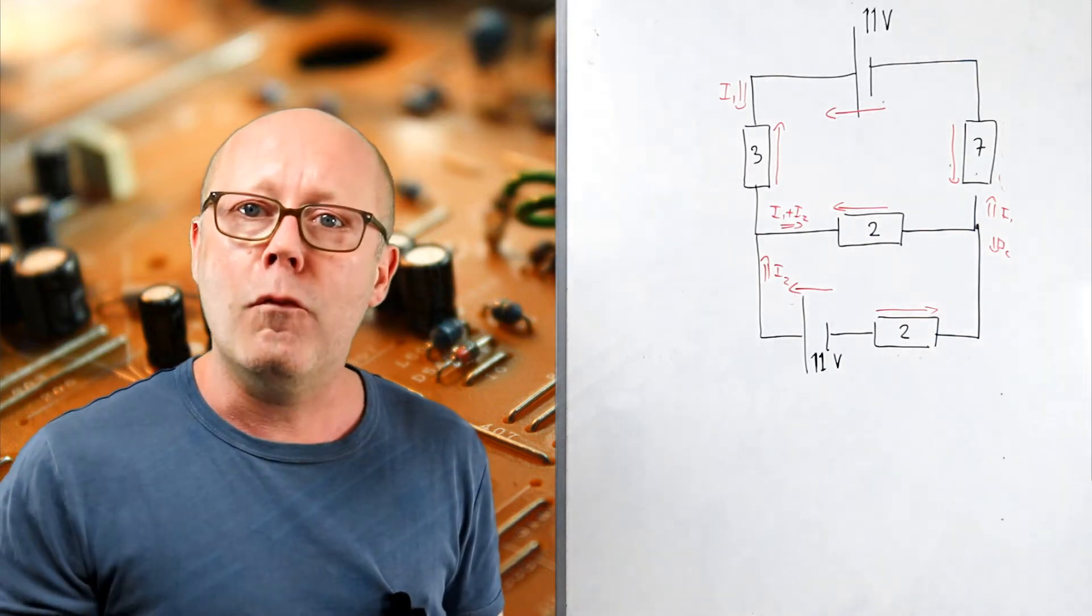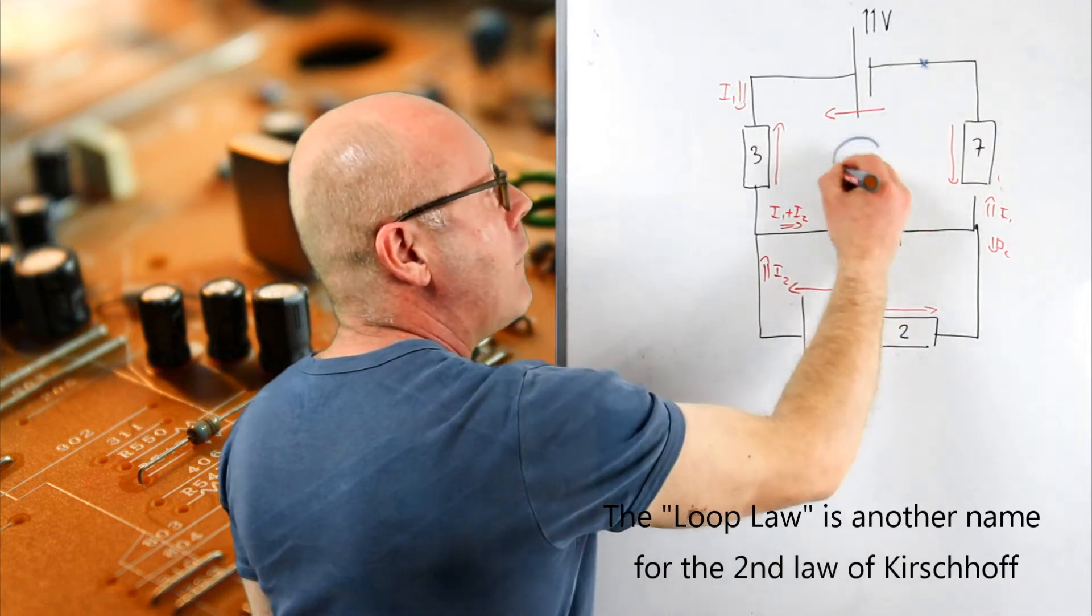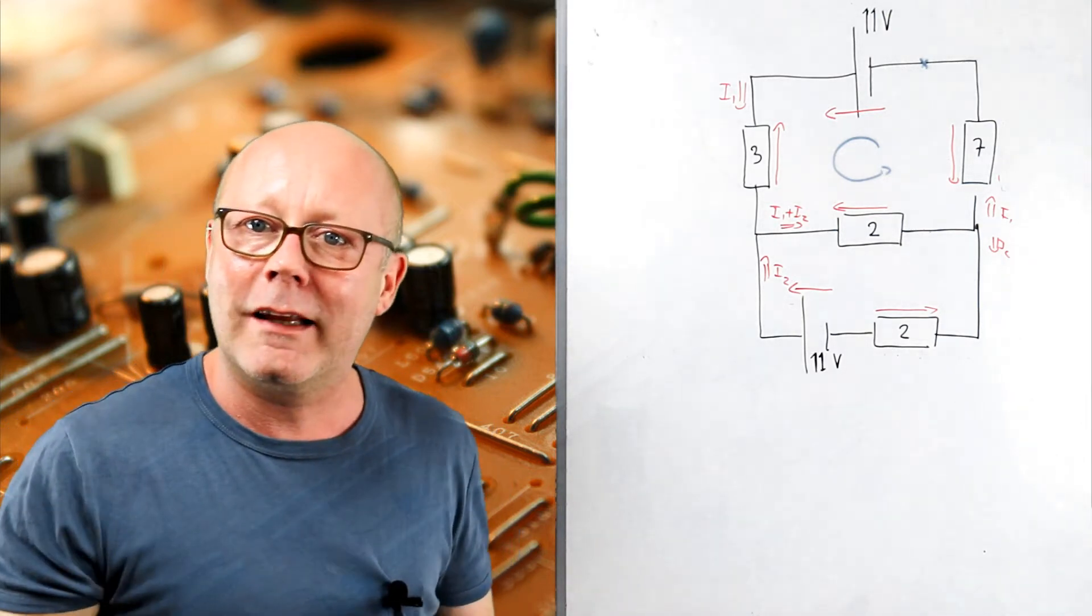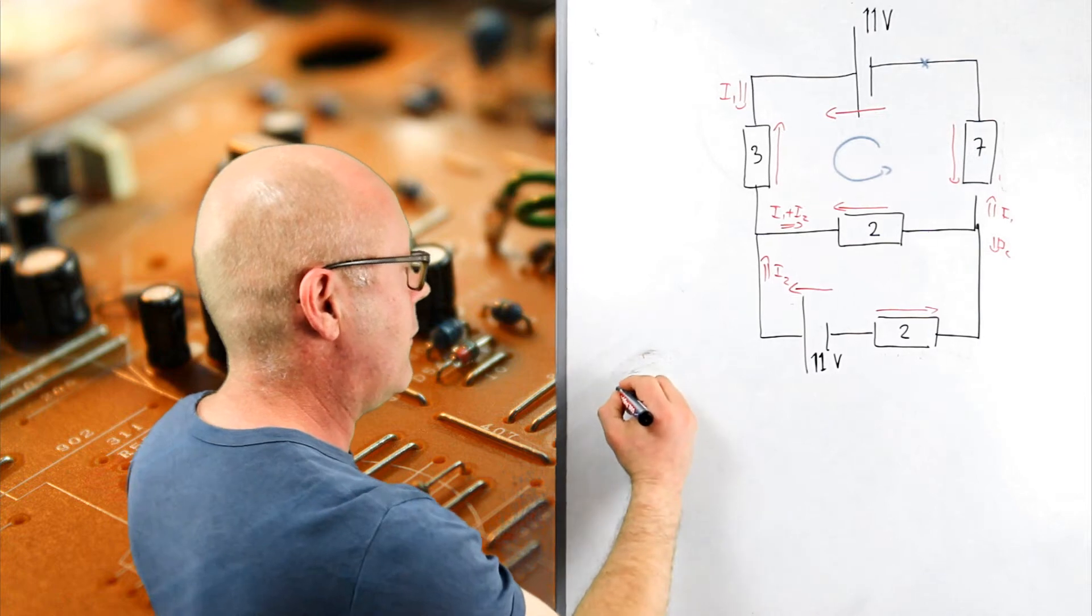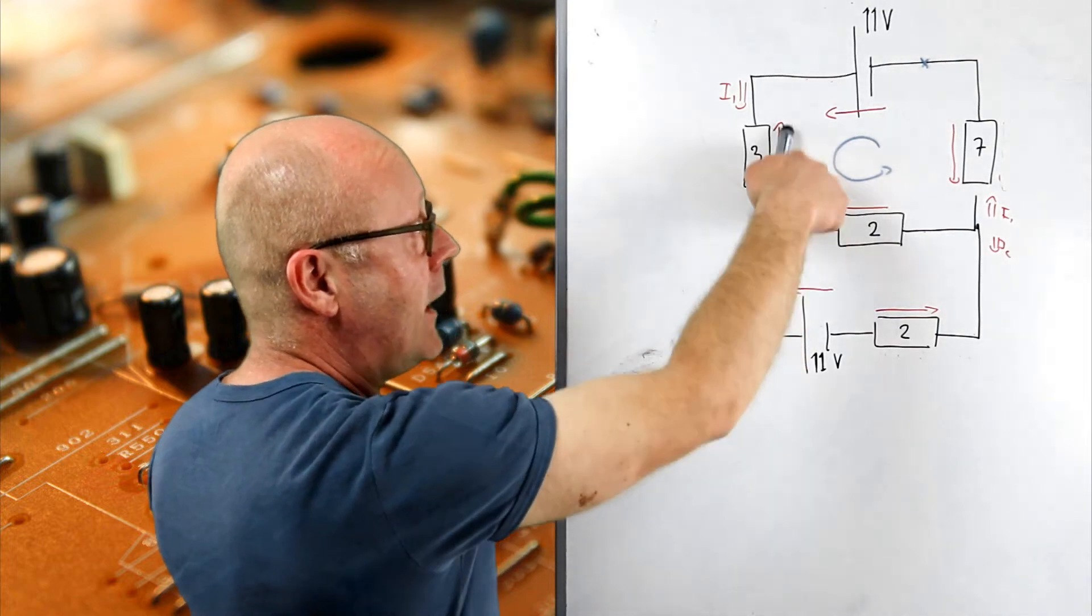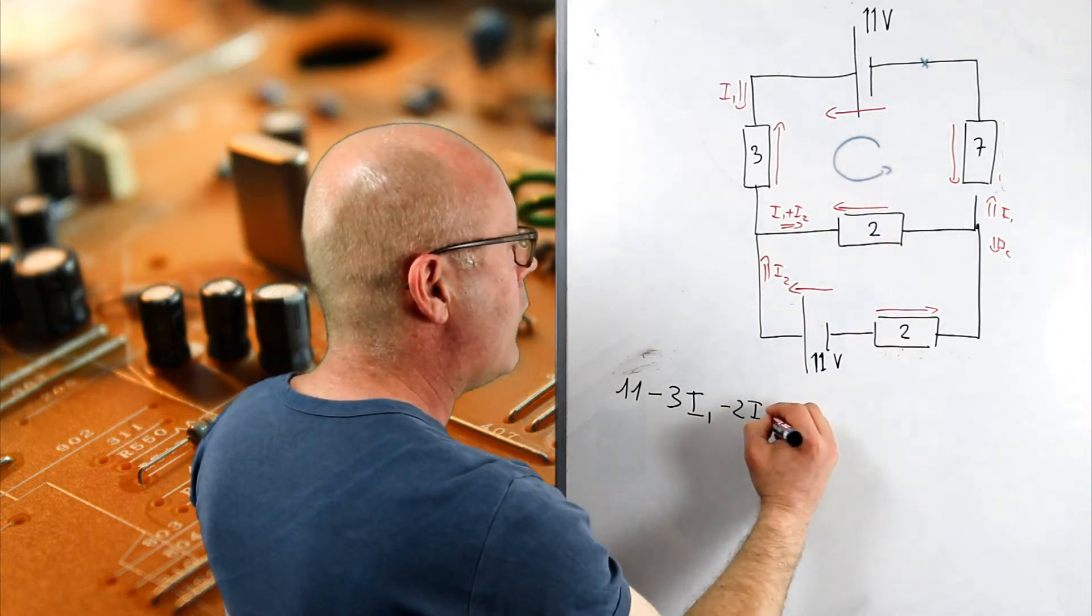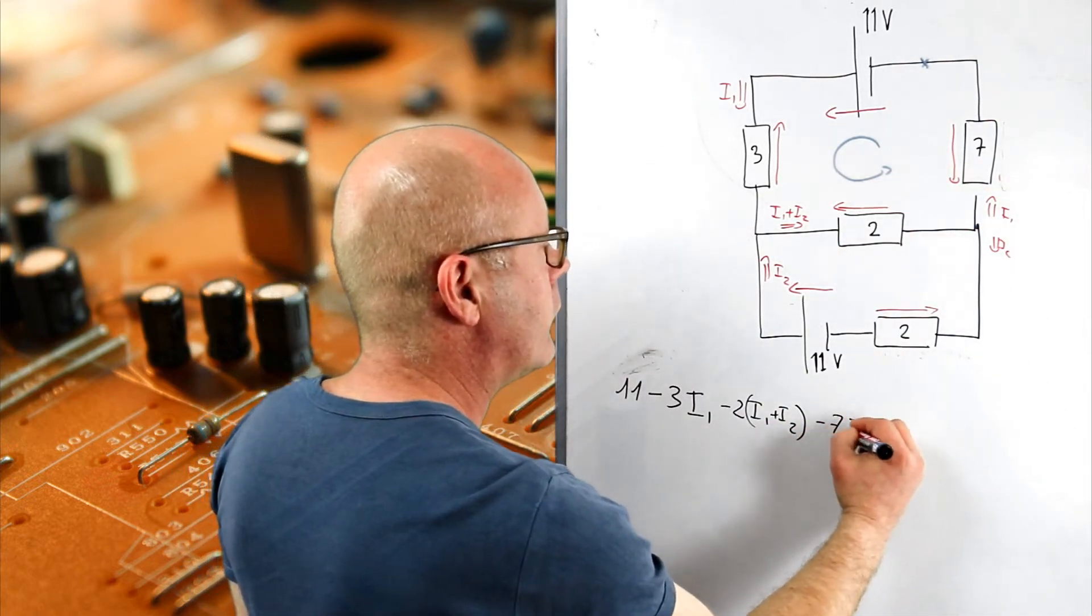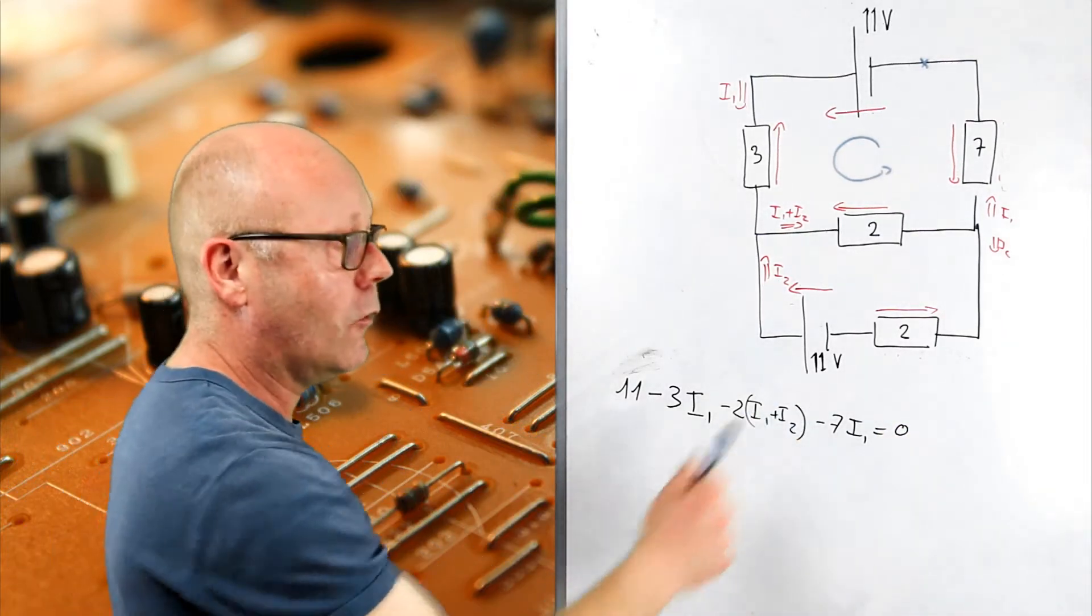And for that, we are going to use the loop law. For instance, I'm going to start here, and I'm going to go around this loop, and I know that the sum of potential differences in a loop is equal to zero. That gives me one equation. Let's do that. So, I've got plus 11. I'll draw a bit underneath there. Plus 11, minus 3 I1, minus because it's going against the direction of the loop. Minus 2 (I1 plus I2), minus 7 I1, equals zero. That's my first loop. I get one equation, two unknowns. I need another equation.